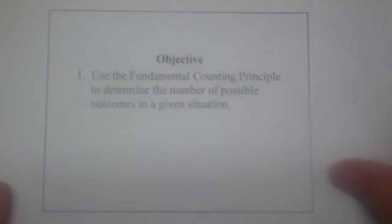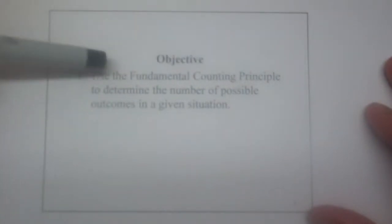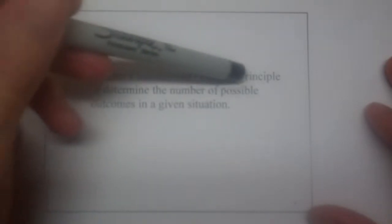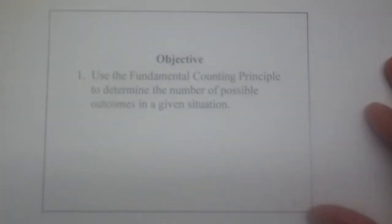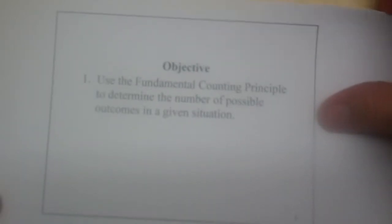We basically have one objective because it's the foundation of everything that we're going to do in this chapter. And that's to make sure that we can use the Fundamental Counting Principle to determine the number of possible outcomes in a given situation. It turns out that it's really easy to understand but that it's super foundational, so we're going to make sure that we understand this pretty clearly.